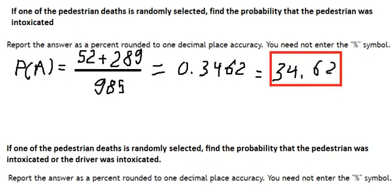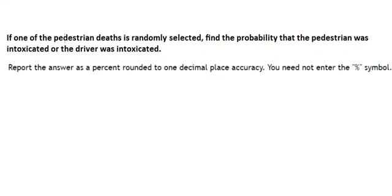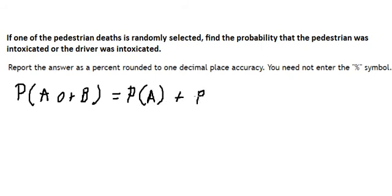Question two: If one of the pedestrian deaths is randomly selected, find the probability that the pedestrian was intoxicated or the driver was intoxicated. The formula for this is P(A or B) equals P(A) plus P(B) minus P(A and B).